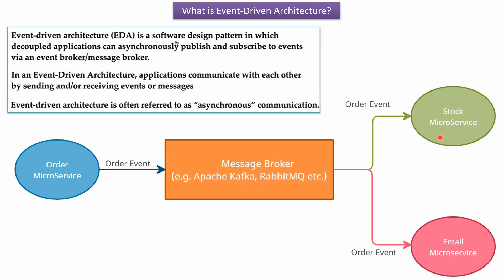The stock microservice consumes the order event from the message broker and, based on this order event, the stock microservice will perform certain functionalities. Similarly, the email microservice will consume the order event from the message broker and, based on this order event, it will trigger some emails.